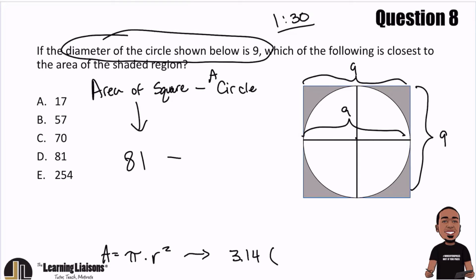And r is the radius. Radius, remember, is half of the diameter. So since the diameter is 9, half of the diameter is 4.5.